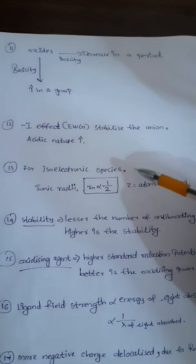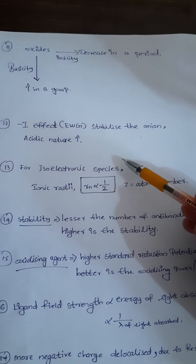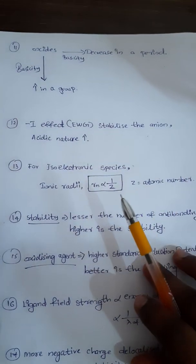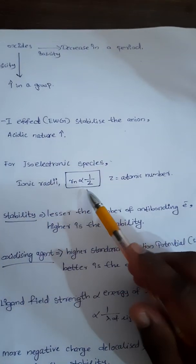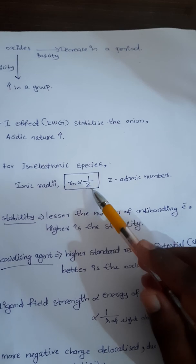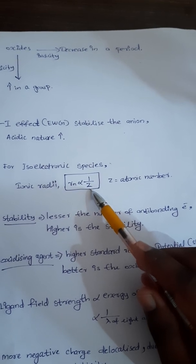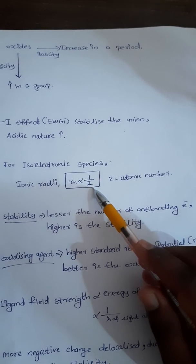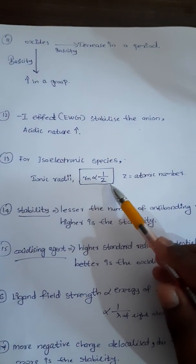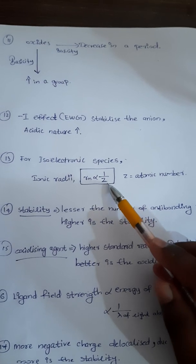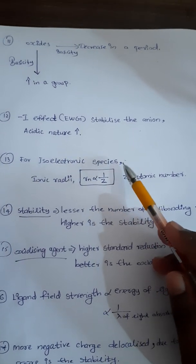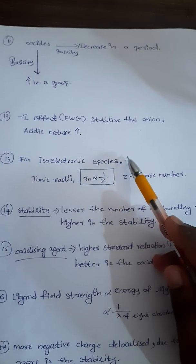Next point: for isoelectronic species, ionic radii Rn is inversely proportional to atomic number Z. So ionic radii and atomic number are inversely proportional for isoelectronic species.